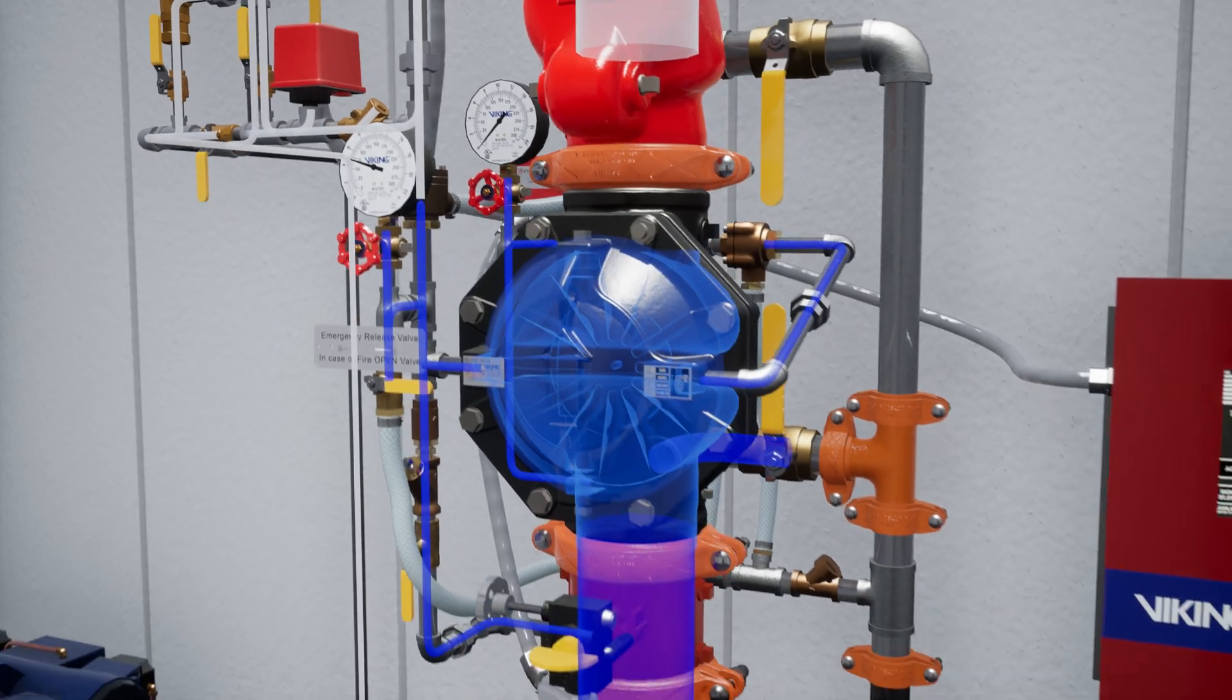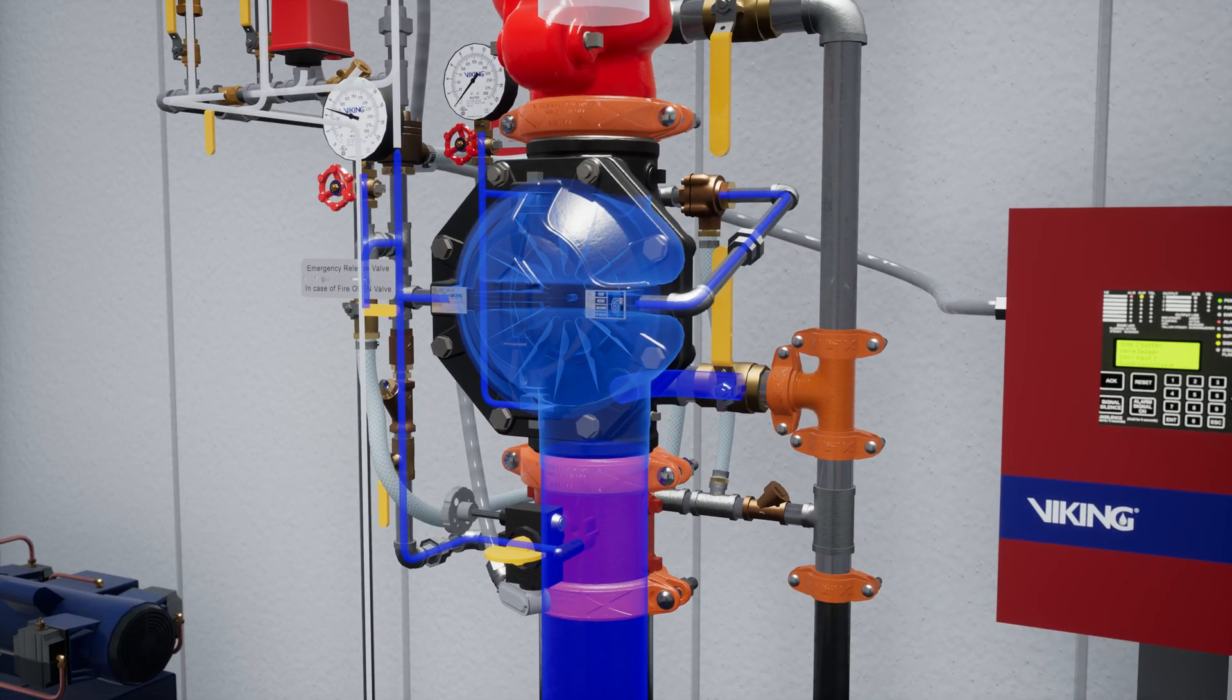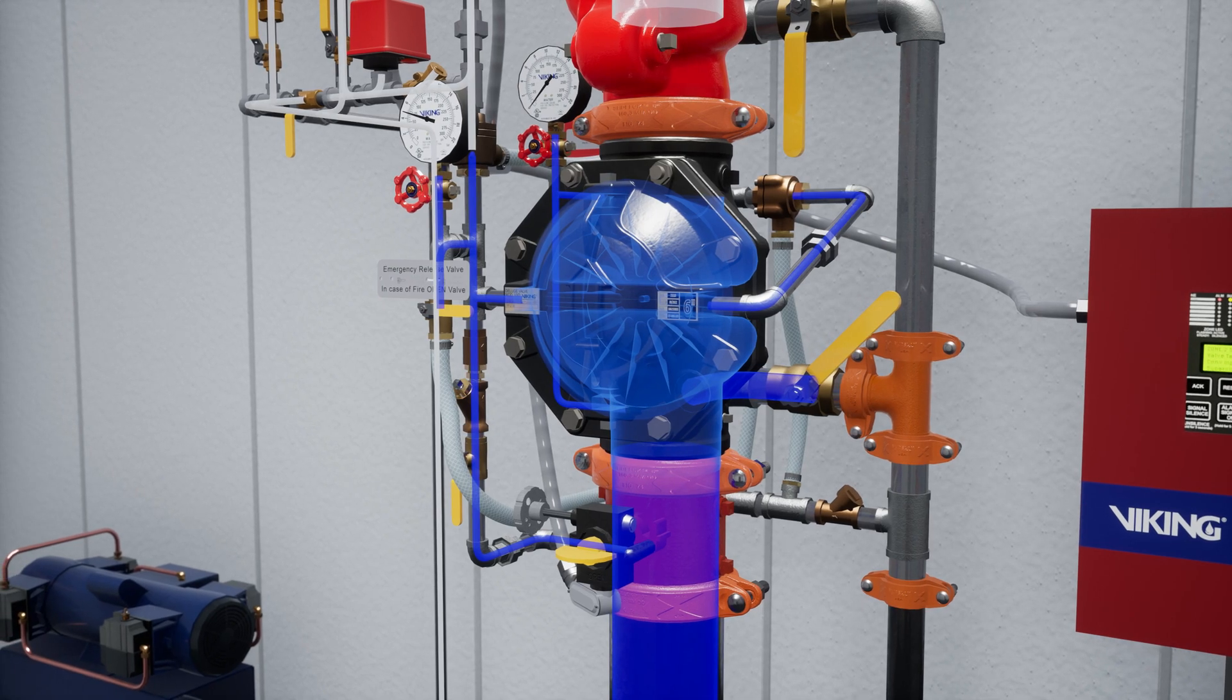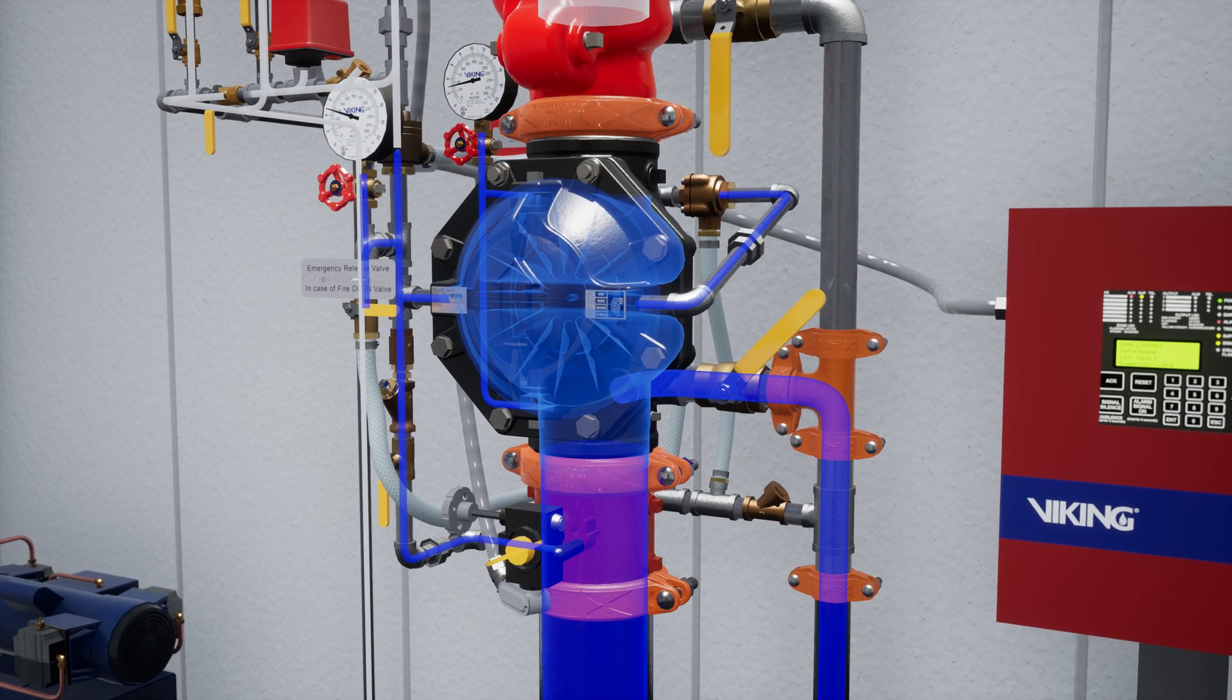Once priming pressure is reestablished in the priming chamber, slightly open the flow test valve, then slightly open the water supply control valve. Once water flow has been established, close the flow test valve. Opening the flow test valve purges any air from the inlet chamber of the VXD valve.